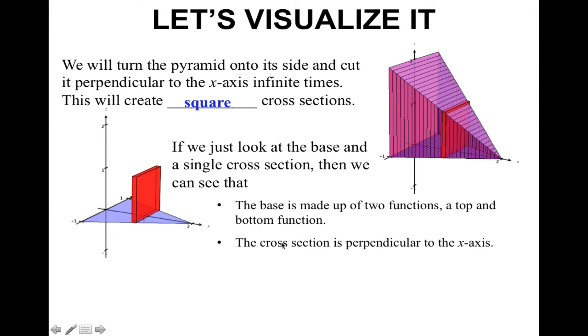The cross-section is perpendicular to the x-axis. This should start sounding familiar from what we did yesterday. The cross-section is a very thin rectangular prism, or a square. It is possible to calculate the volume of a single cross-section. That's what we're going to be doing. We're going to calculate the volume of a single cross-section.